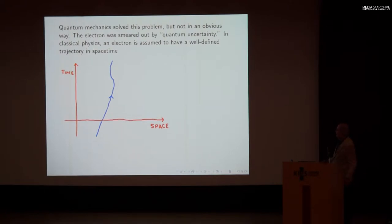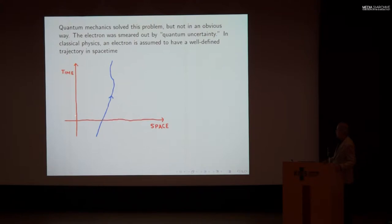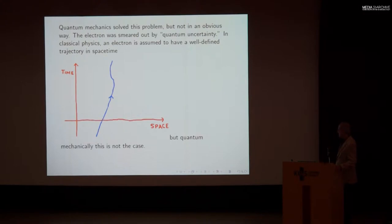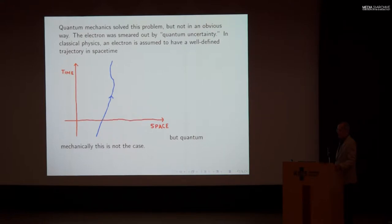Quantum mechanics involves a much more clever way of smearing out the electron by quantum uncertainty. In classical physics, an electron is a point particle which at any moment has a definite position, so as time evolves the electron has a trajectory in spacetime — the blue curve tells you, at each point in time, where the electron was in space. But quantum mechanically, you can't say exactly what path was followed by the electron. It has an inherent fuzziness given by quantum mechanical uncertainty.